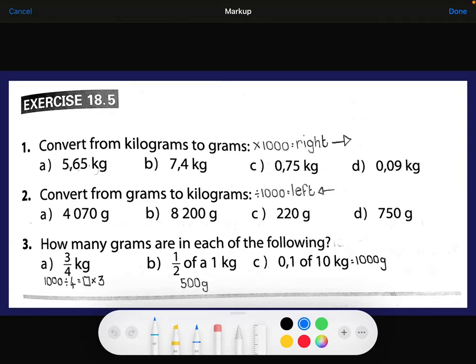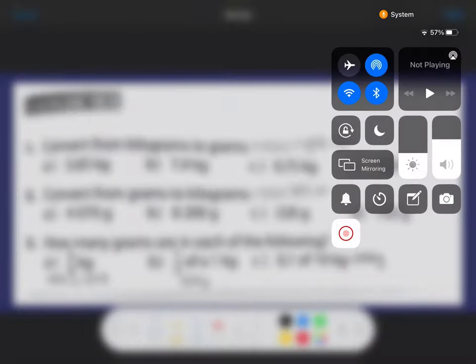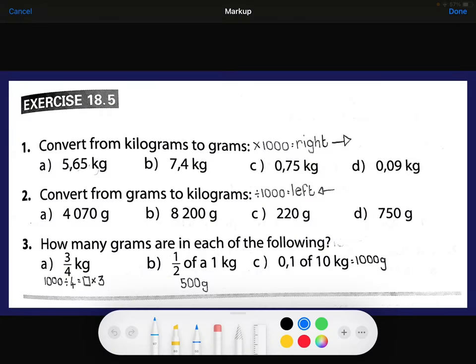Hi everyone, I'm just going to quickly scan through exercise 18.5 with you to see that you understand what to do. Just quickly, I think you guys are getting this. At number one, to convert kilograms to grams, remember that we're timesing by a thousand. In other words, we are moving the comma to the right three spaces.